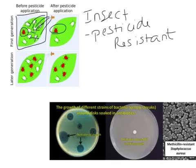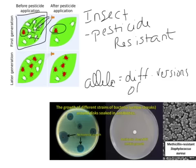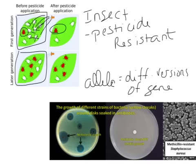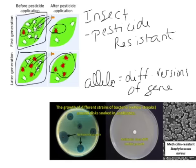Remember, alleles are our different versions of genes. You could have alleles for red hair, blonde hair, or brown hair — the gene codes for hair color, and the allele is the different variety. Here we've got alleles for red and white bugs. In the next generation, as the red one reproduces, you see more and more of them. You spray more insecticide, white ones die off again, red ones survive. Eventually the population shifts to have more red insects because it is beneficial to be resistant to that insecticide.